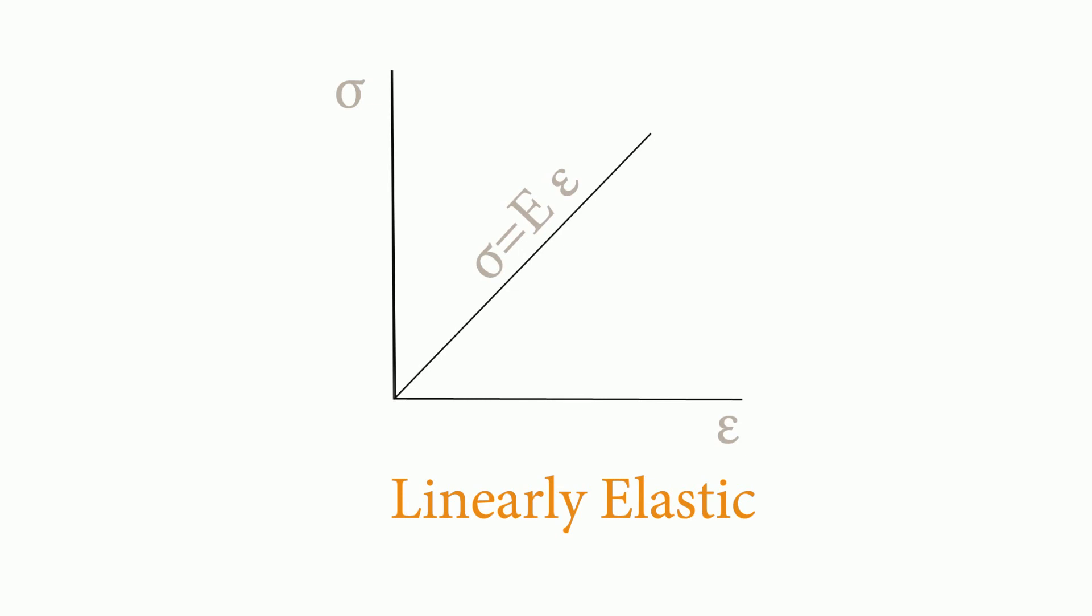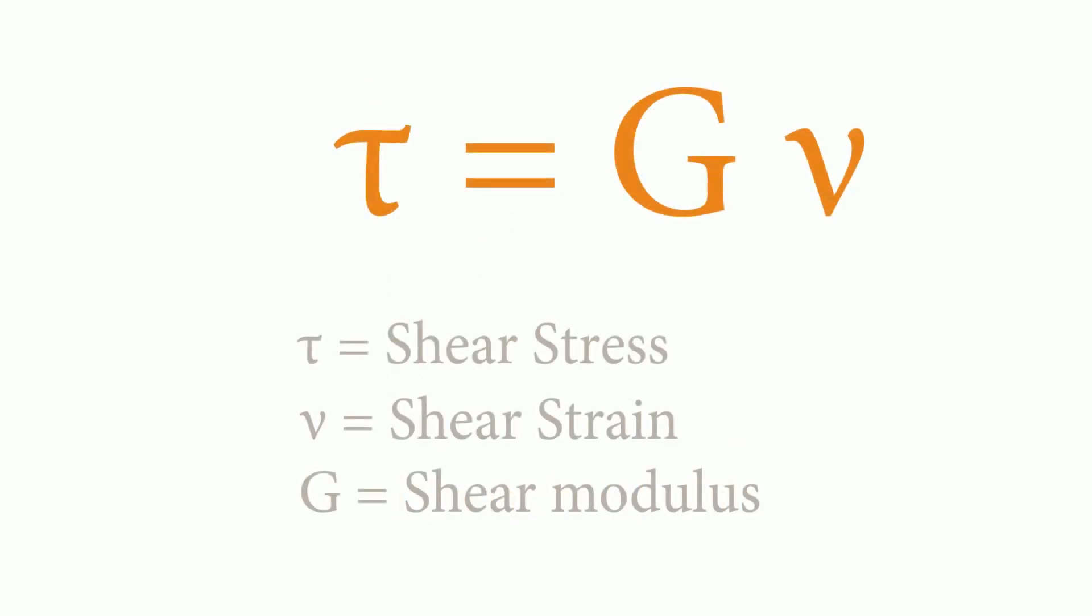In another category, shear stress is equal to the modulus of rigidity times the shear strain: τ = G ν. Here, the proportionality constant is the modulus of rigidity.